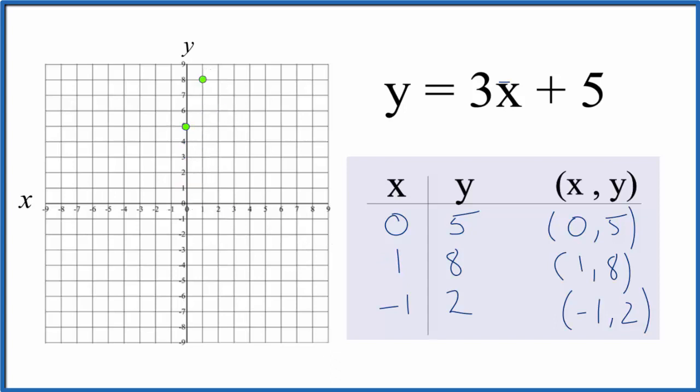We could stop there and draw a line with two points, but it's good to have a third point to make sure you did this correctly. So x is negative 1 and y is 2.